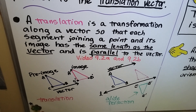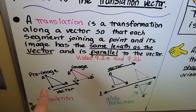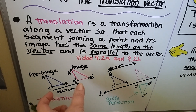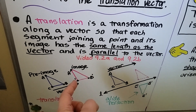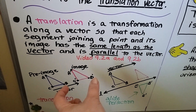A translation is a transformation along a vector so that each segment joining a point and its image has the same length as the vector and is parallel to the vector. We talked about that in 9.2a and 9.2b. So if you look at this translation, we have a blue pre-image here and we have our pink image — abc and a prime b prime c prime. The length of our vector is the distance between c and c prime, and also between a and a prime, and b and b prime.